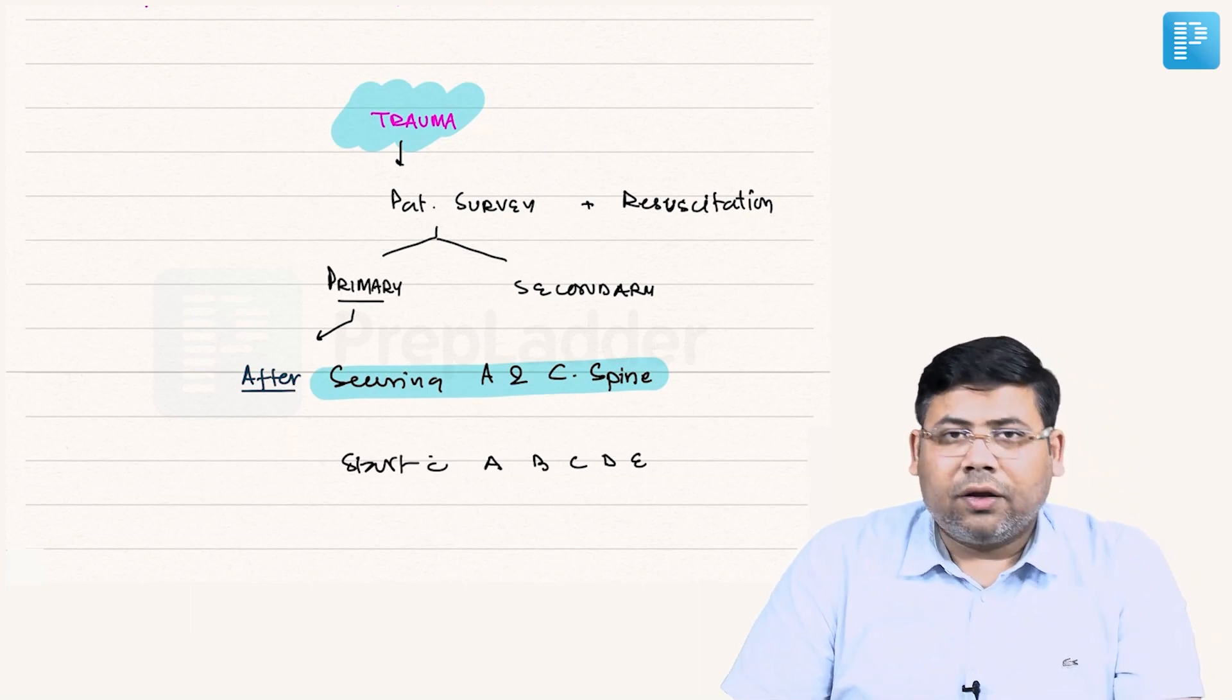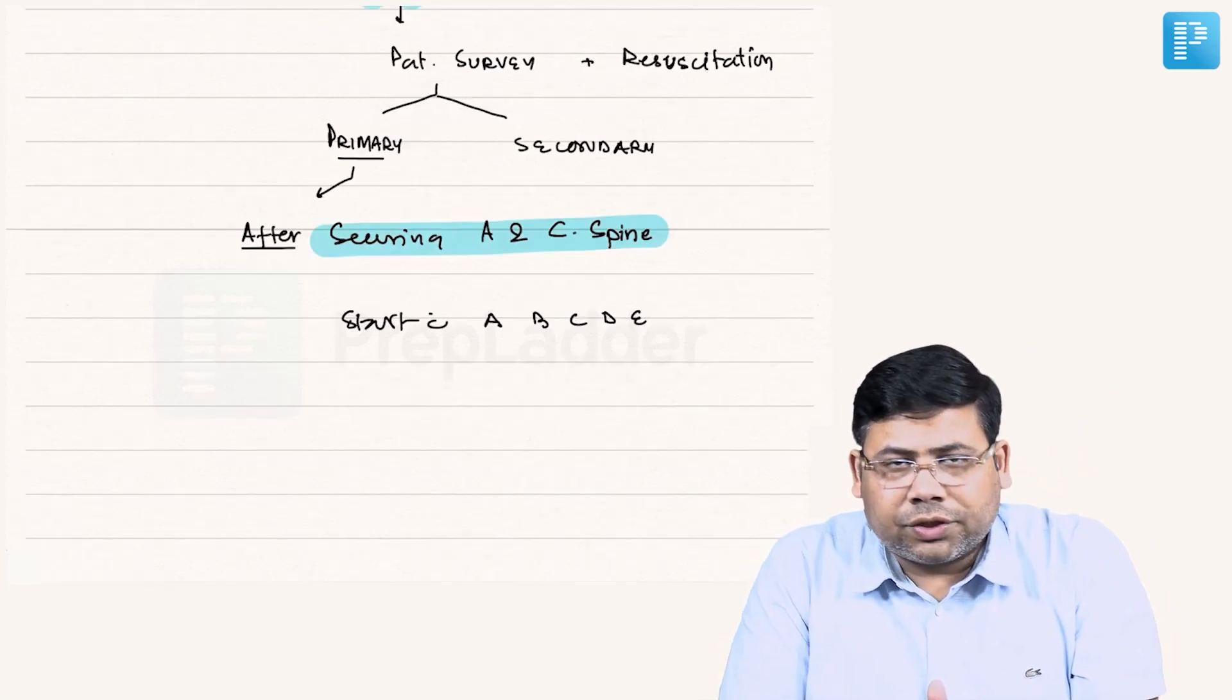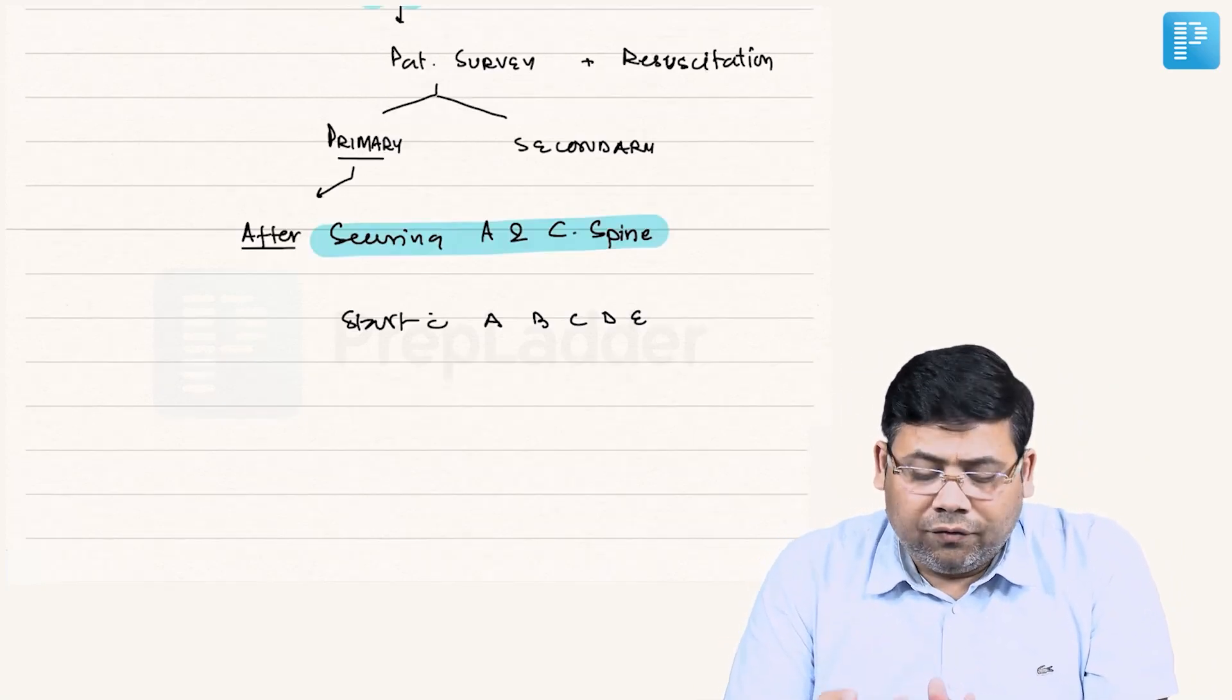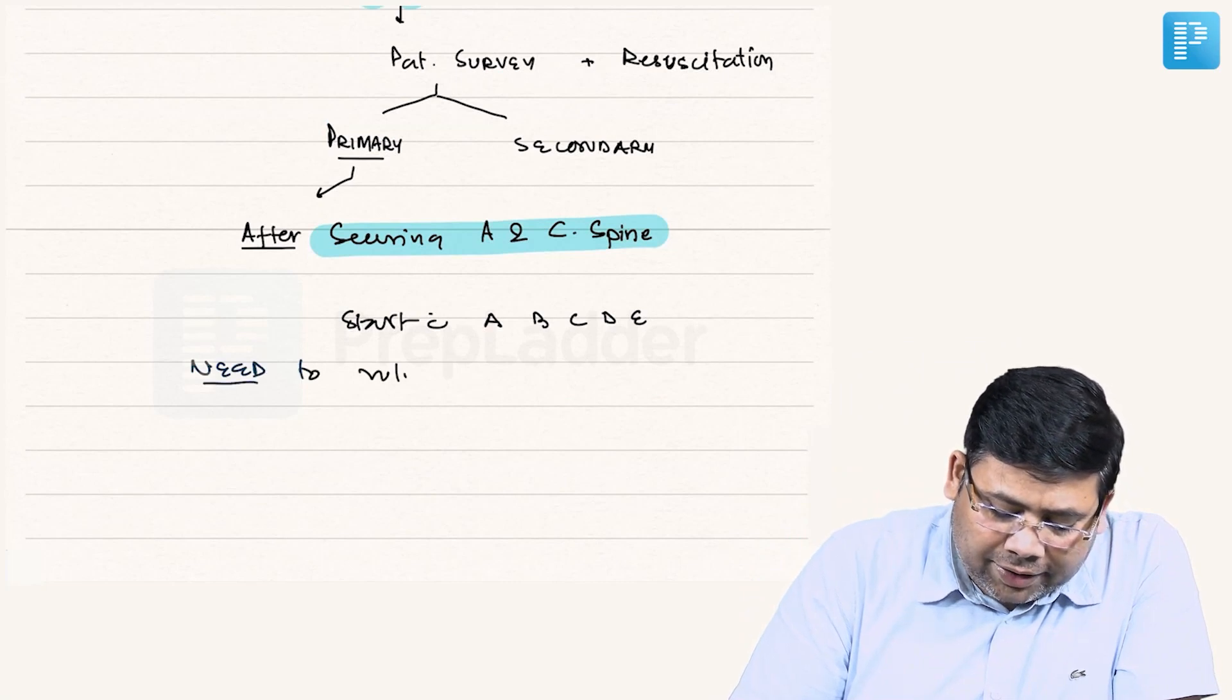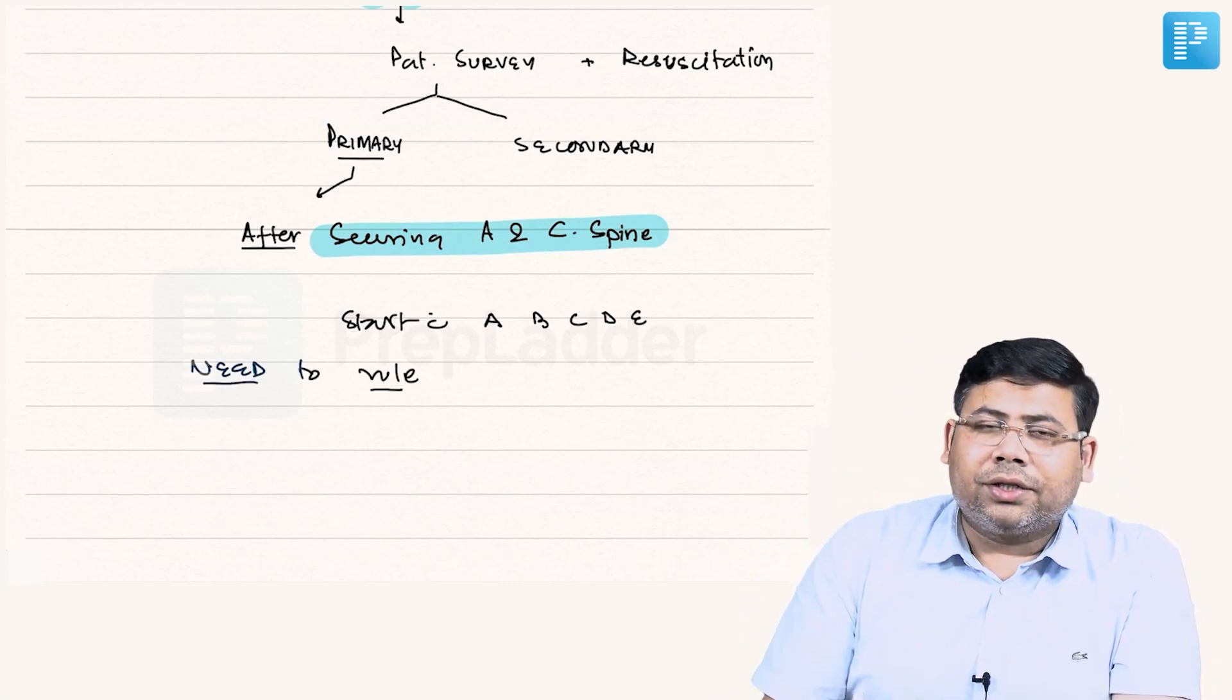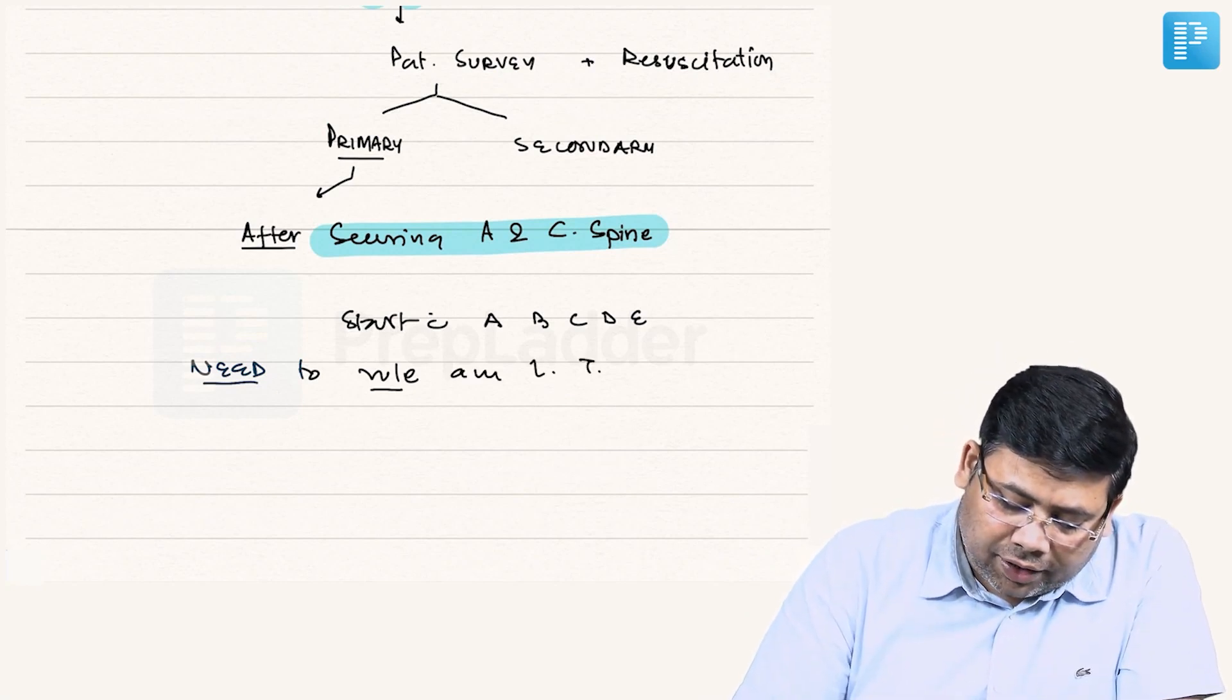This is assessment of airway, breathing, circulation, disability, and exposure. Why are they important? We need to rule out any emergency condition which can be life-threatening, to rule out any life-threatening injury.